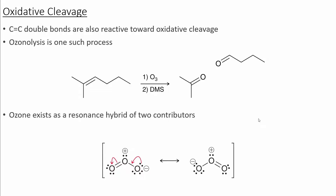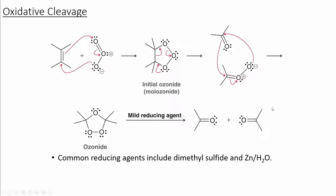Ozone exists as a resonance hybrid where we can have a negative charge on either of the terminal oxygens. The first step of this mechanism is the ozone reacting with the alkene to form an ozonide. The ozonide can then decompose to form our ketone product and a new ozonide, which can then decompose again to form our second ketone product. Often, we use a reducing agent like dimethyl sulfide to speed up this process.